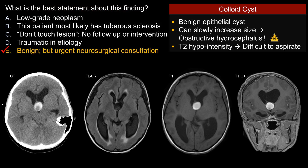Back to our choices: Choice E is clearly the best answer, especially with signs of acute obstruction. Choice A is wrong because this is not a low-grade neoplasm. For Choice B, it tries to trick you into thinking this is a subependymal giant cell astrocytoma, or SEGA, in the setting of tuberous sclerosis.